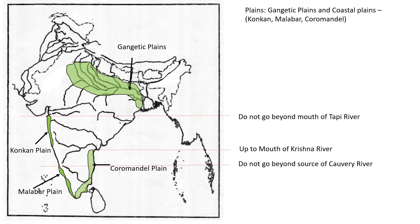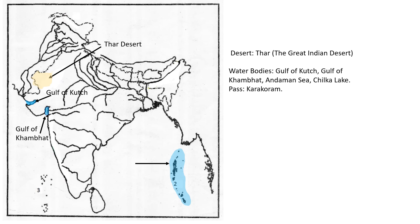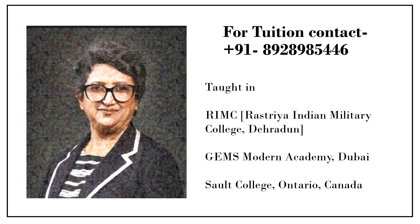Then the desert — that elongated part is the Thar Desert. First look at the water bodies: this is Gulf of Kutch, then Gulf of Khambat. Below that, the elongated yellow part is the Thar Desert. Then the area around the Andaman Sea. Inside the land, there is a small area — that is Chilika Lake. And the last one is the Karakoram Pass — remember that red color bridge symbol you used in topo? That same symbol is for a pass. Thank you.